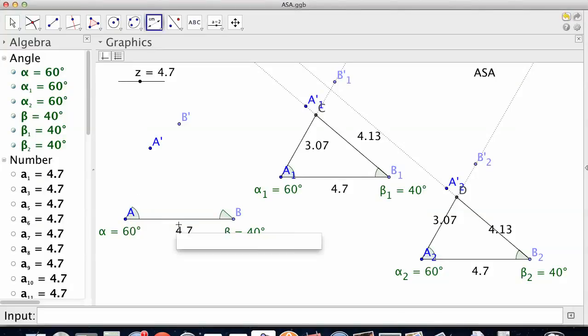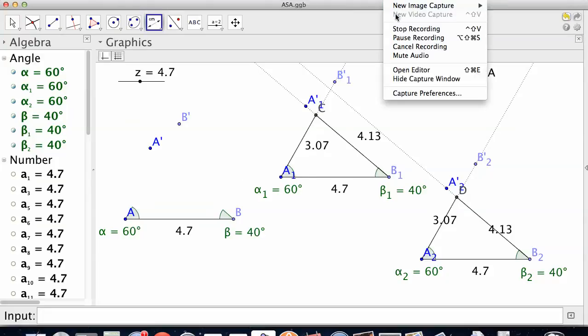If I know I got 60 degrees, a 4.7, and a 40 in between it - the 4.7 in between it - that's all I need. And my other parts are going to be exactly the same. And that's congruent triangles.